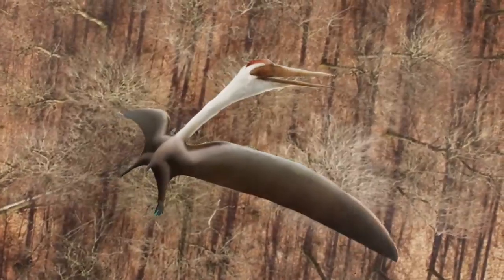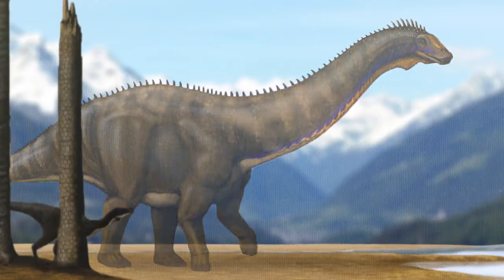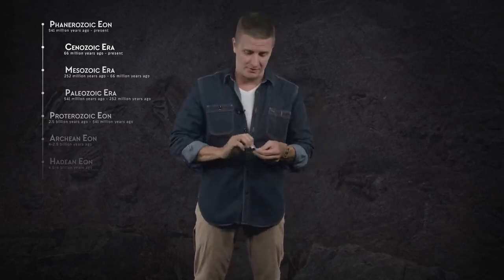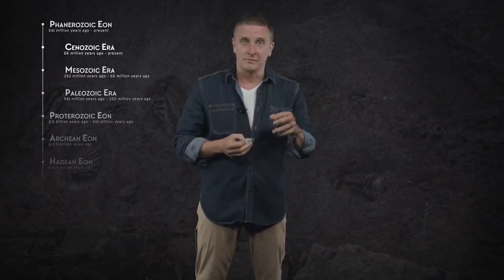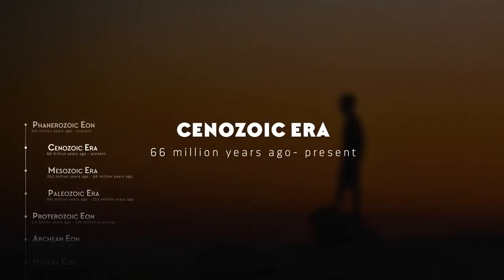The victims of the KPG extinction were some of the biggest reptiles of land, sea, and sky, including all of what we now call the non-avian dinosaurs. Birds, of course, survived the cataclysm, making them the last surviving lineage of the dinosaurs. With all the great reptiles gone, the smaller animals that remained were able to eke out a living in the next era, the Cenozoic.